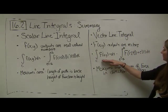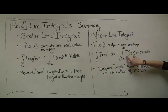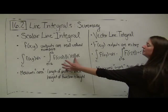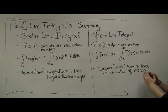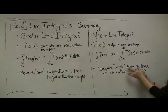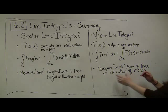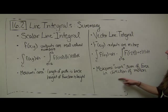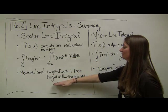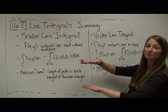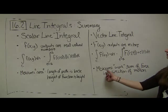For vector line integrals, we compute f(c(t)) but instead of multiplying by the magnitude of c prime of t, we take the dot product with c prime of t. This measures the amount of work in the same direction as our motion — it's the sum of all forces exactly in the direction of travel. If traveling against the vector field you get negative values; for scalar integrals, negative values occur when the function is below the xy-plane.